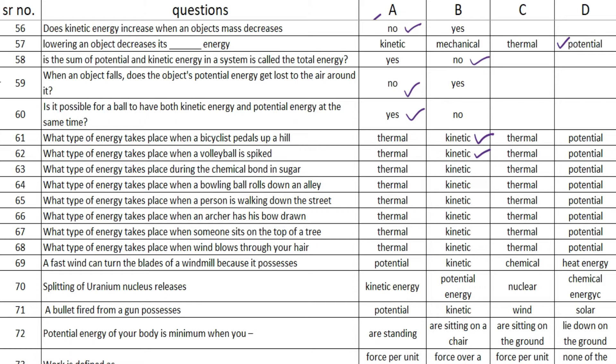The next one is: what type of energy takes place during the chemical bond in sugar? The answer is option D — potential. The next question is: what type of energy takes place when a bowling ball rolls down an alley? The answer is option B — kinetic.